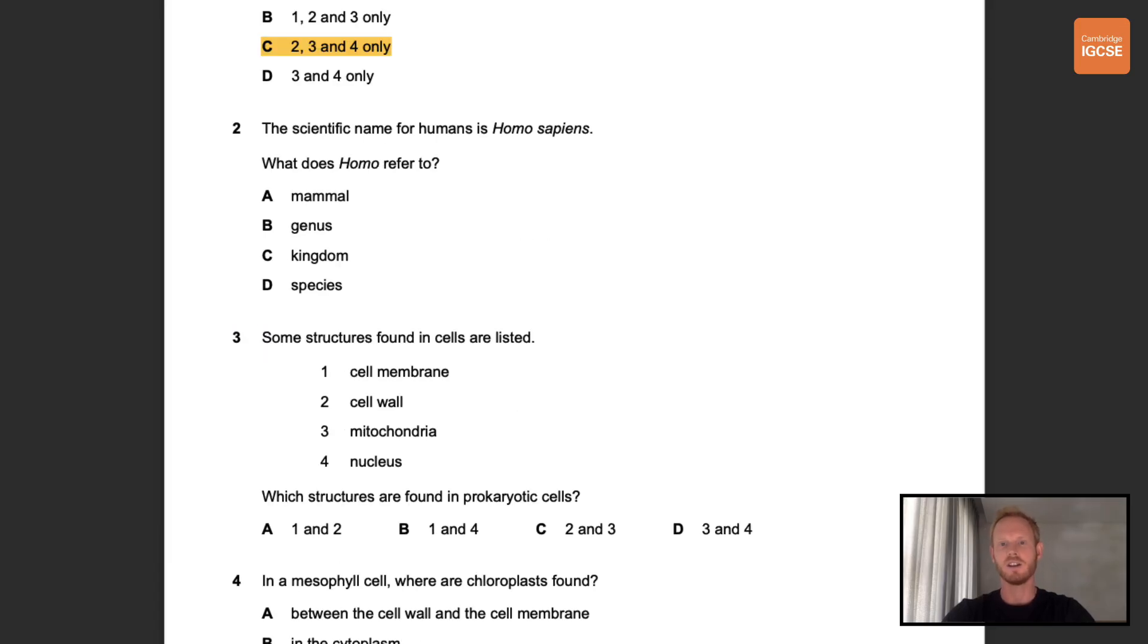Number two. The scientific name for humans is homo sapien. What does homo refer to? So in the binomial system of naming species, the scientific name of an organism is made up of two parts: the genus and the species. The genus always comes first and has a capital letter. So the correct answer here is B.